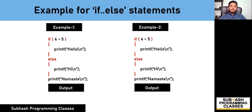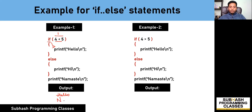Now let us move on to examples for the if-else statement. If the condition is true, the statements in the if block will be executed; else, the else block will be executed. In this case, is 4 less than 5? Yes — that is true, resulting in a value of one, which is non-zero. So the program control enters the if block, executes the statement — printing 'hello' — ignores the else block, and continues with the rest of the statements. The statement after the conditional control structure is 'namaste', so the output is 'hello, namaste'.